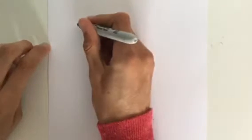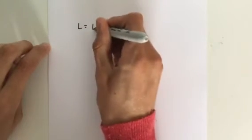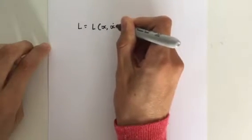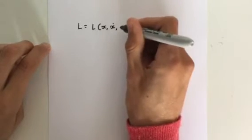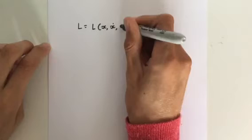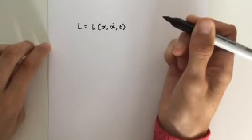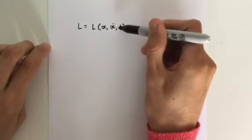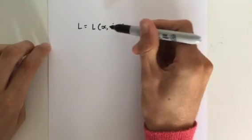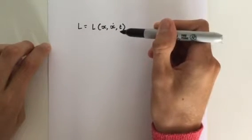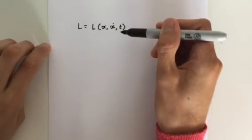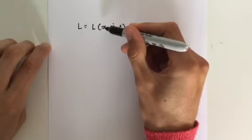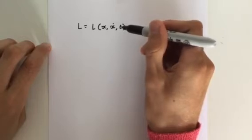If you remember, the Lagrangian L is a function of position x, velocity x-dot, which just means the rate of change of position. And if the Lagrangian has an explicit time dependence, it will have a component of time. So x stands for position, x-dot velocity, and t time. Now, this is only for Cartesian coordinates. We can make this more general for polar coordinates or any coordinate system you can come up with.